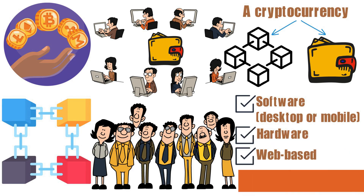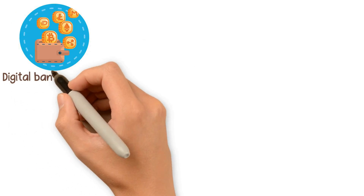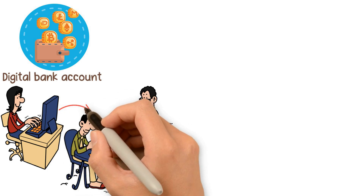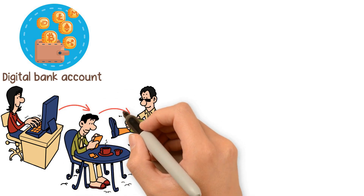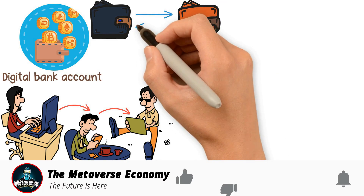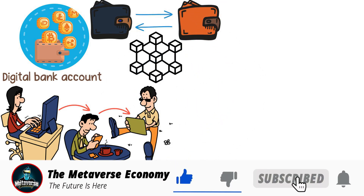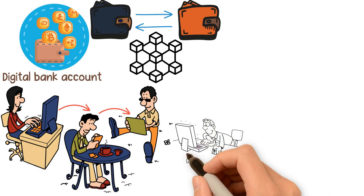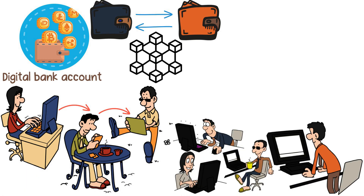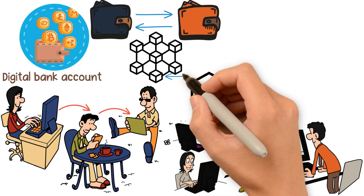A cryptocurrency typically has its own blockchain and wallet. These wallets can be software, desktop, or mobile, hardware, or web-based, where transactions are recorded on the blockchain of the specific currency. A wallet is like a digital bank account where you store your coins or tokens to make transactions with other people online who hold wallets for that specific cryptocurrency. The transactions that happen between wallets are recorded on the blockchain of that specific cryptocurrency.